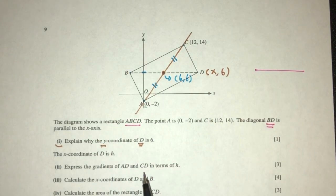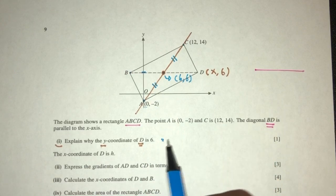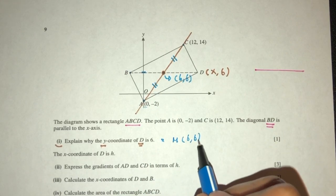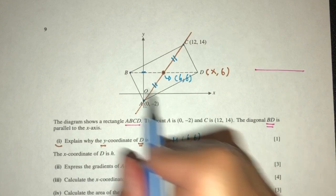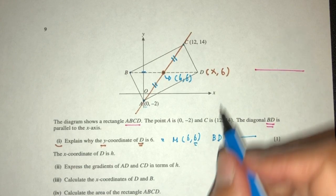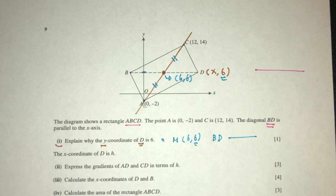Because the midpoint of AC was found to be 6 and 6, and we know the line BD is a horizontal line, obviously the value here will be 6. That's the reason why.